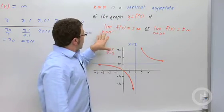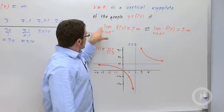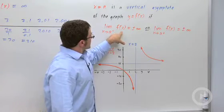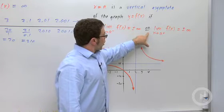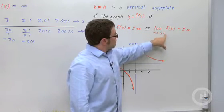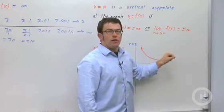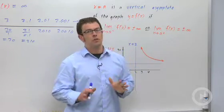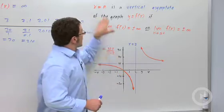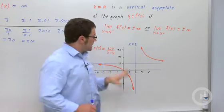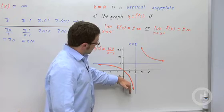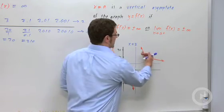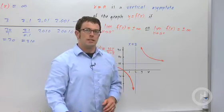Either the limit as x approaches a from the left of f of x is plus infinity, or it's minus infinity, or the limit as x approaches a from the right is plus infinity, or minus infinity. Any one of those four things is true, x equals a is a vertical asymptote. In this case, we have two of those things true. The limit as x approaches 2 from the left is negative infinity. The limit as x approaches 2 from the right is positive infinity.